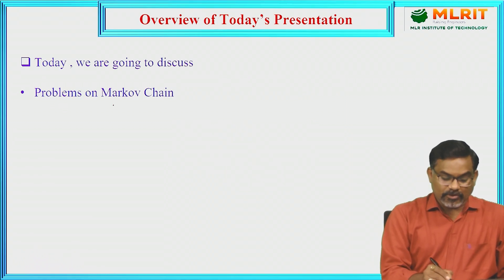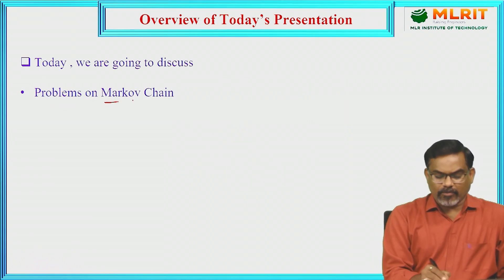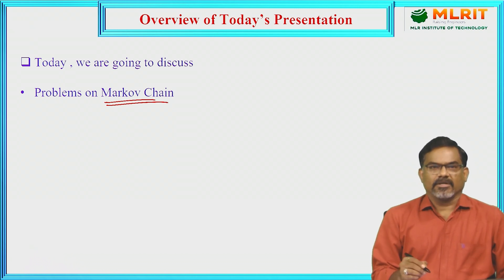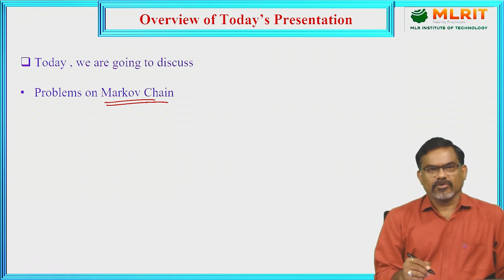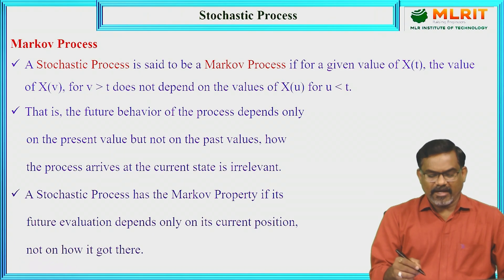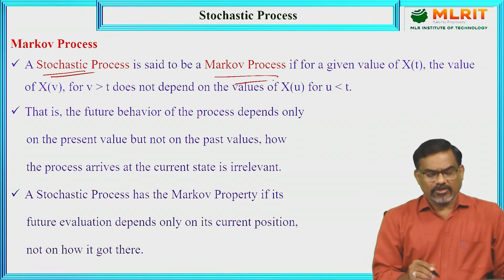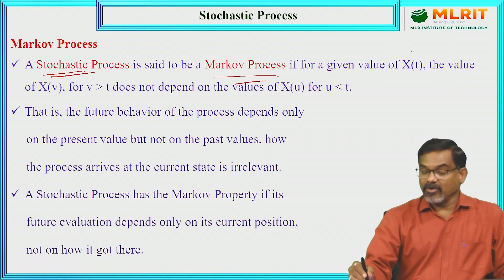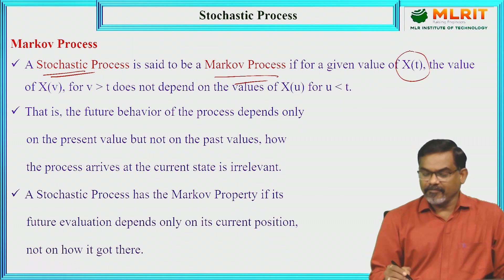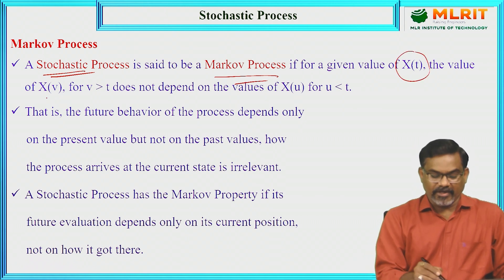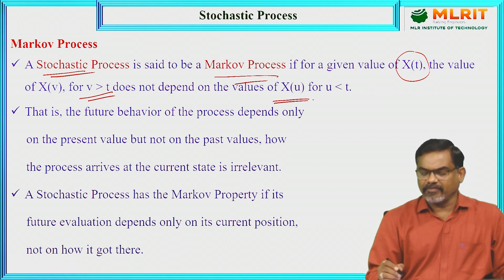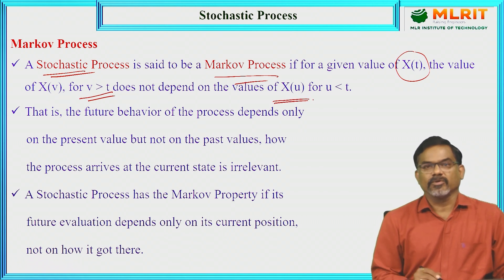Today I am going to solve some problems on Markov chain. In the previous sessions, I introduced the Markov process and Markov chain. A stochastic process is said to be a Markov process if, for a given value of x(t), the value of x(v) for v greater than t does not depend on the value of x(u) for u less than t.